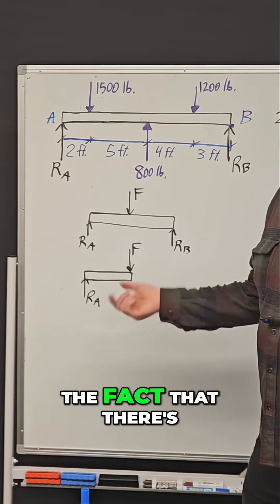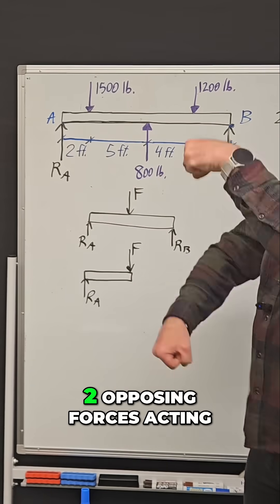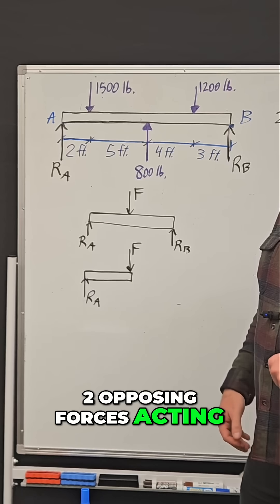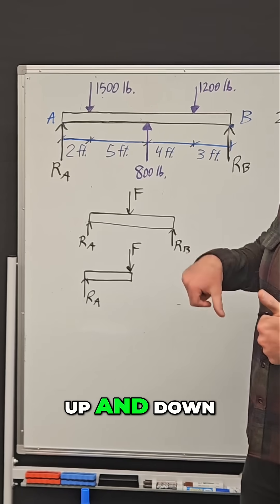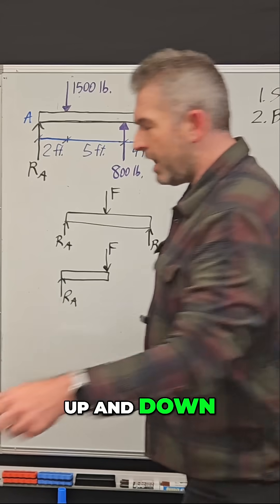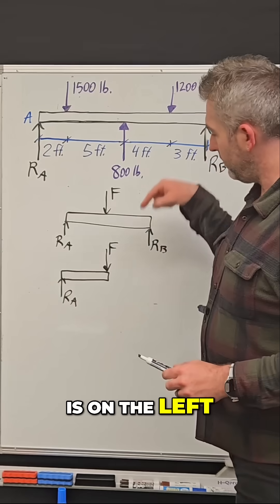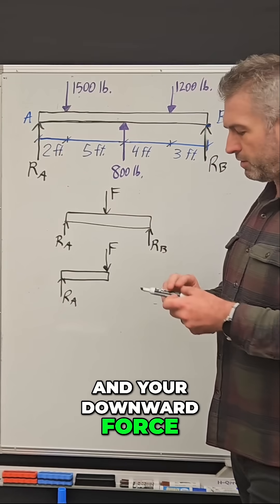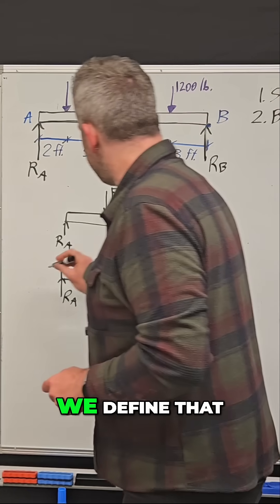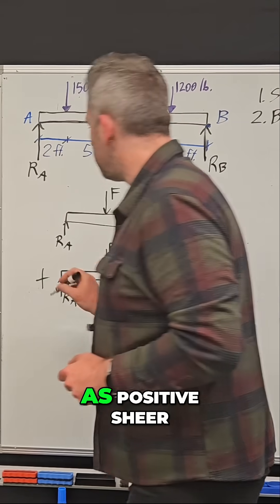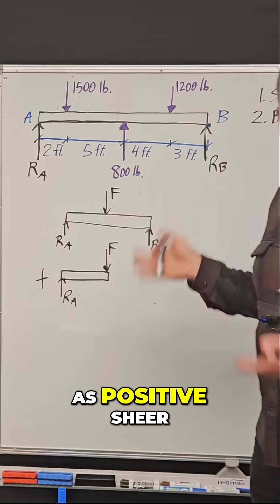Due to the fact that there's two opposing forces acting up and down — when your upward force is on the left and your downward force is on the right, we define that as positive shear.